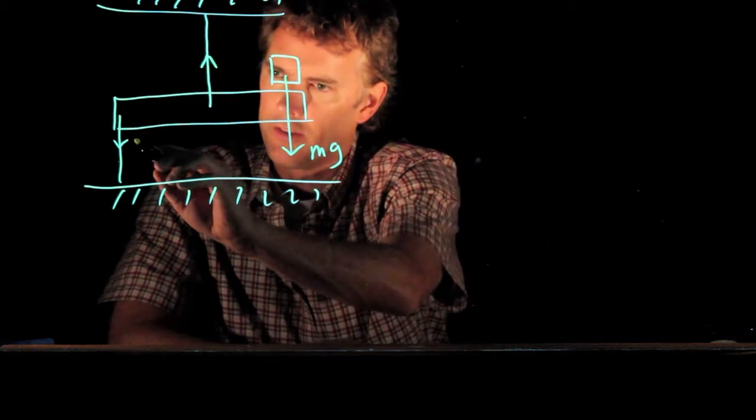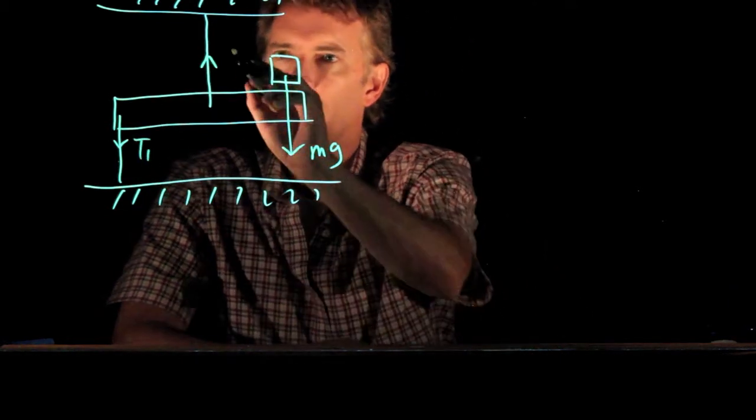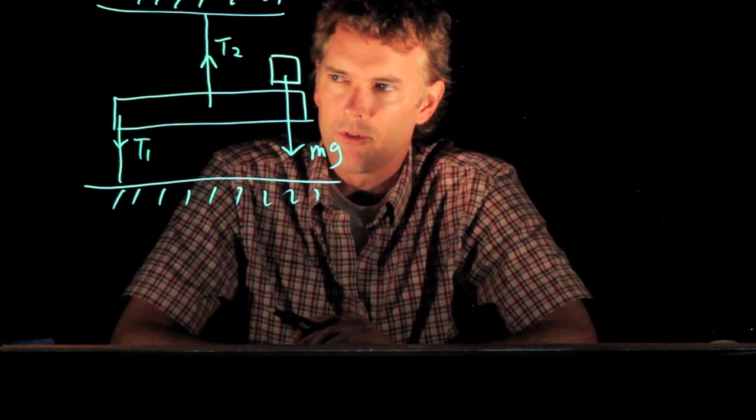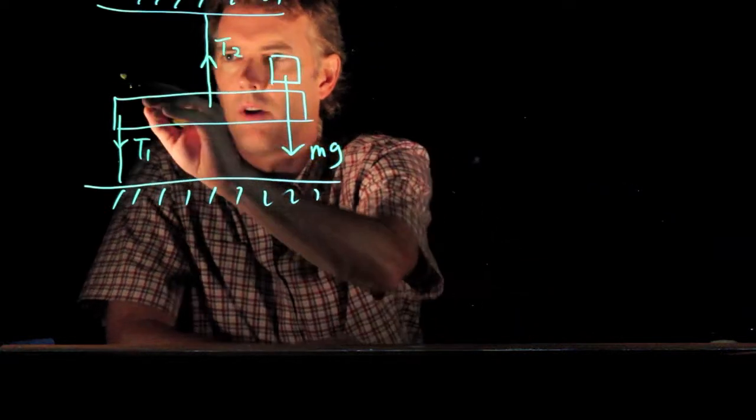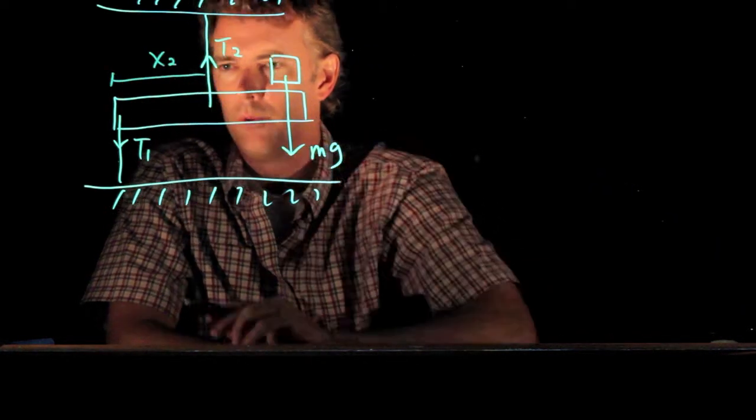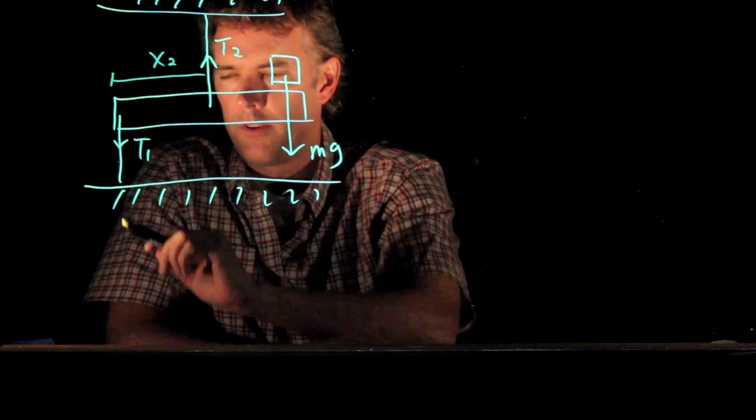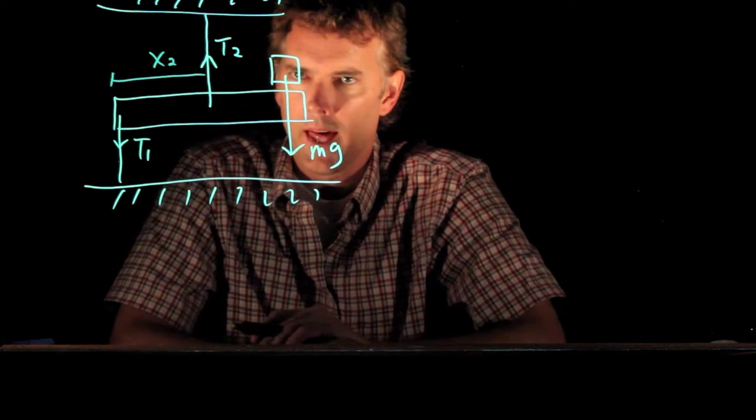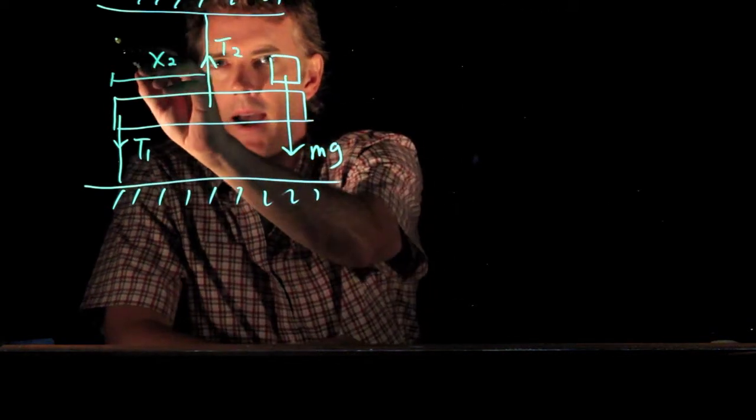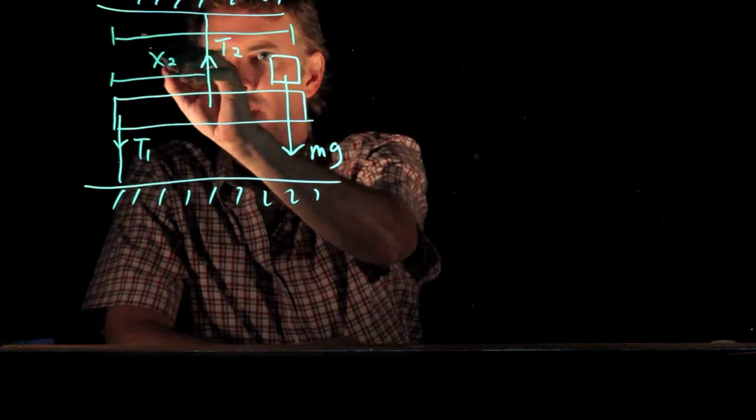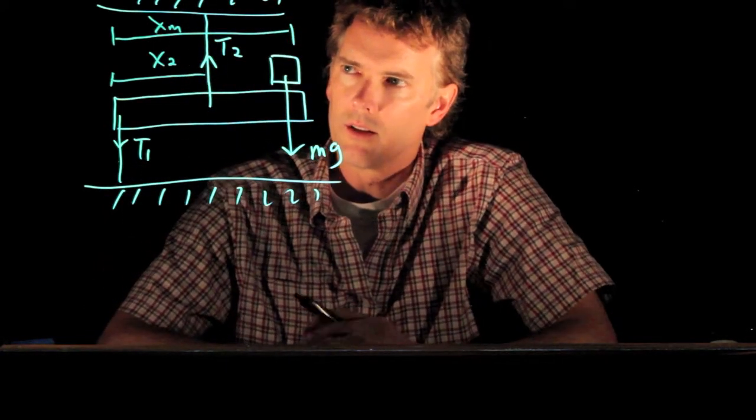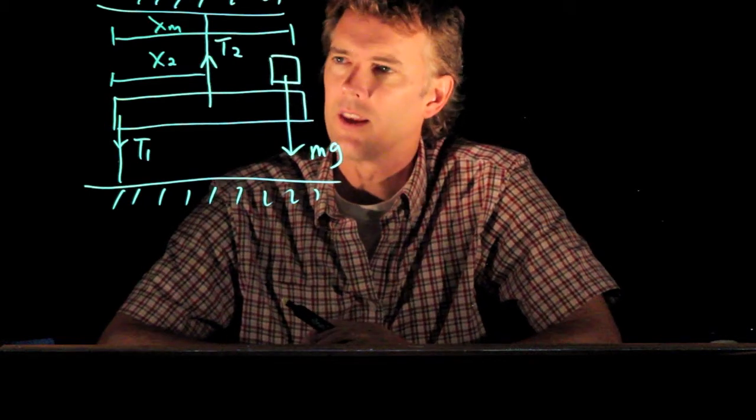So let's label a few of these things. Let's say this is tension 1 and this is tension 2. And let's give them some positions. Okay, so this position right here we will call x2. The position of this one is all the way at the left of the beam. We'll call that x equals zero. And the position of the mass we will say is x sub m. All right, so that's what our picture looks like. A little bit messy, but I think you get the idea.